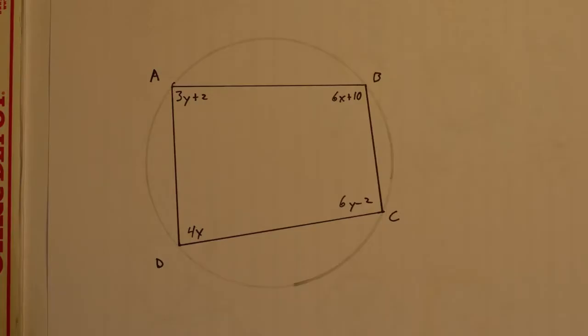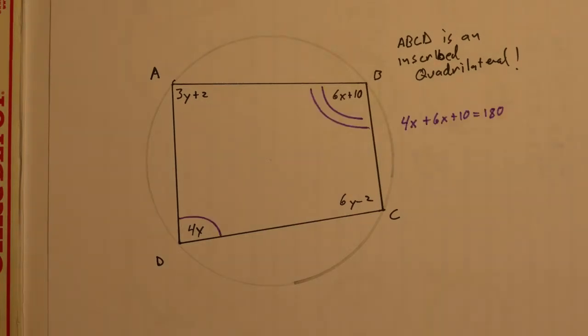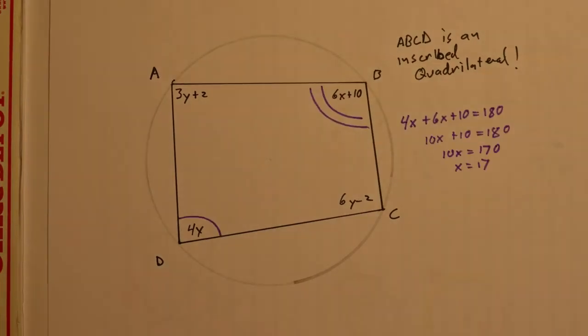One last example for this part: we've got quadrilateral ABCD inscribed in a circle, and we want to solve for the unknown variables. With an inscribed quadrilateral, opposite angles are supplementary. So angle B and angle D add up to 180, and likewise angle A and angle C add up to 180 as well.